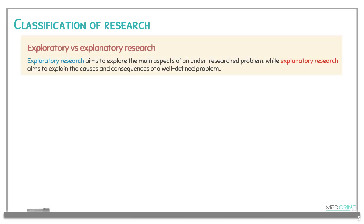Research can also be classified as either explanatory or exploratory. Exploratory research aims to explore the main aspects of an under-researched problem. Explanatory research, on the other hand, aims to explain the causes and consequences of a well-defined problem — where you have already found the problem and are trying to explain what caused it and what its consequences are.